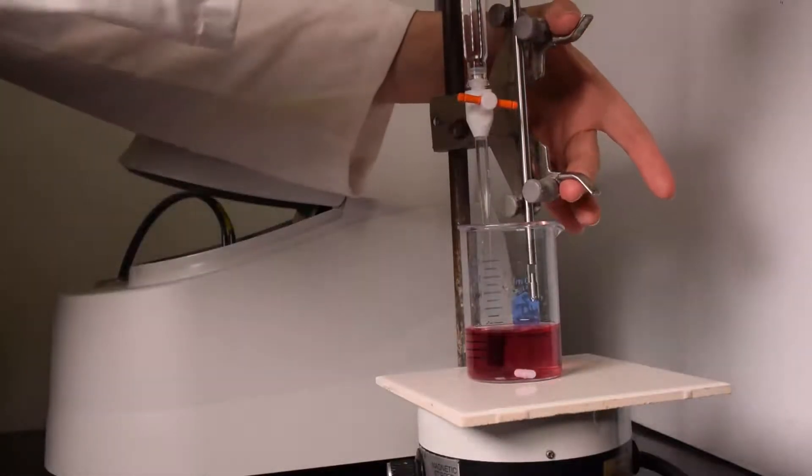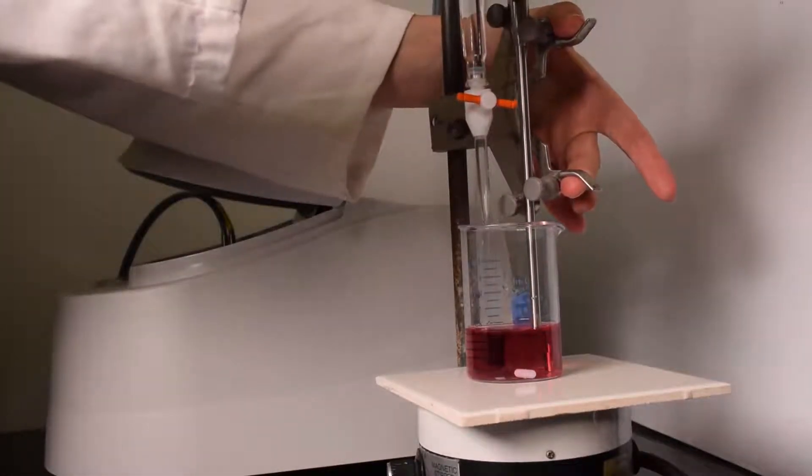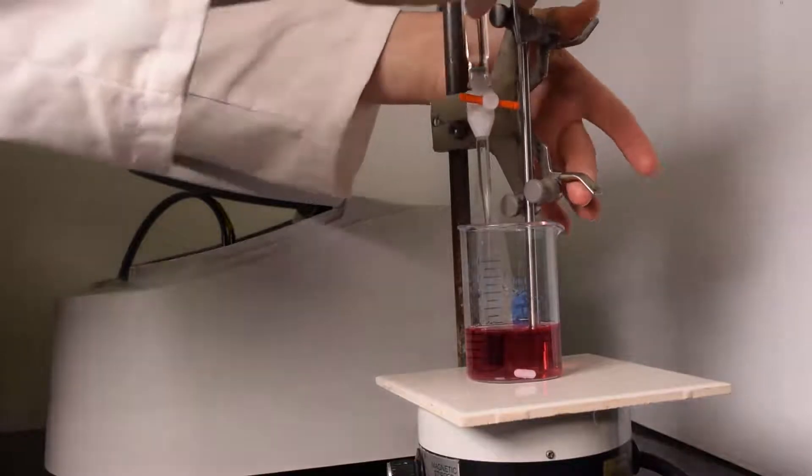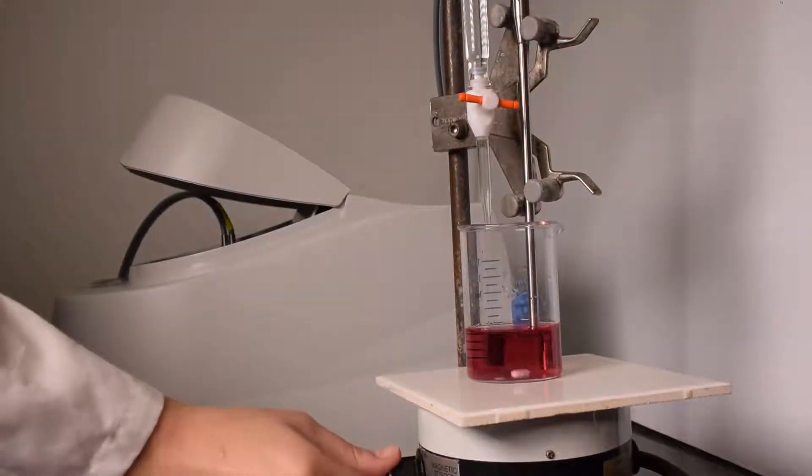Lower the probe into the solution, making sure the probe is not touching the side of the beaker and is high enough so that the magnetic stir bar will not hit the probe when stirring.